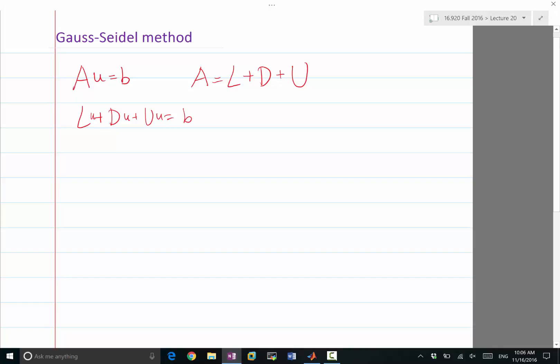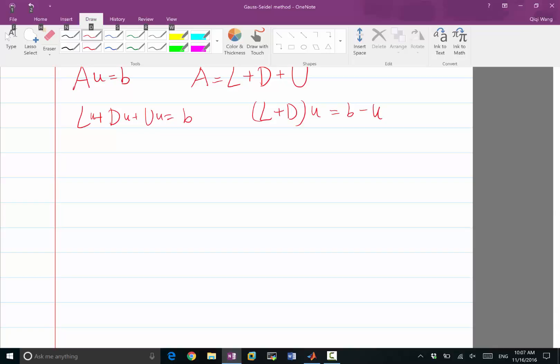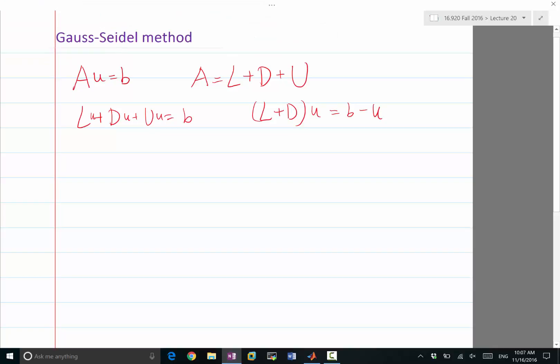Now, instead of moving both L and U to the right-hand side, we only move U to the right-hand side. So (L+D) times u would be equal to b minus Uu. And now we put indices: this is k+1 and this is k.